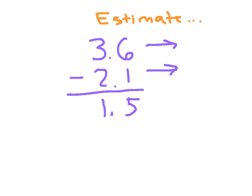3 and 6 tenths to the nearest whole number is 4. 2 and 1 tenths to the nearest whole number is 2, and I look at that ones place in both of those numbers. In this case, since this is a subtraction problem, for my estimate I also use a subtraction problem. 4 minus 2 is 2.